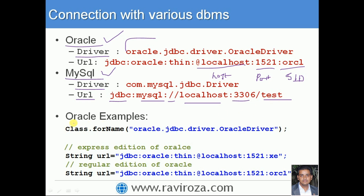Here is the example for Oracle. You use Class.forName() and in that you specify the string representing the class to be loaded in the JVM. For Oracle, that is oracle.jdbc.driver.OracleDriver — meaning oracle is the package, jdbc is the sub-package, driver is another sub-package, and OracleDriver is the class name.